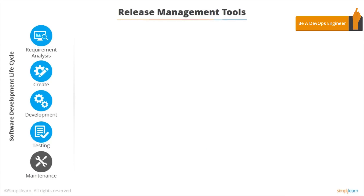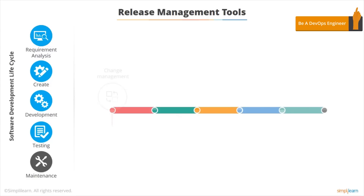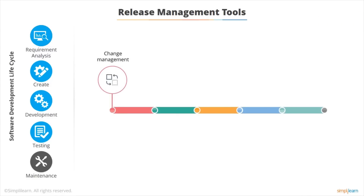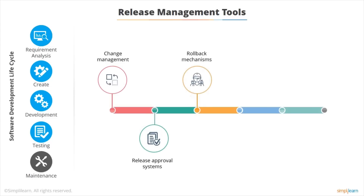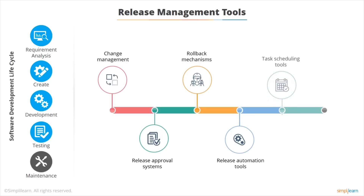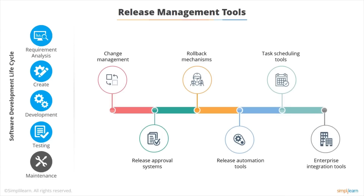Then we've got release management tools which are also very important. Change management systems — we don't make changes into production unless they've been fully documented and approved. We need approval systems to approve releases. We need important rollback mechanisms — if we deploy an erroneous system into production we need to get back to the previous version as quickly as possible. We need to automate the process of release and be able to schedule tasks so that we can run various components of the system at the right time and in the right sequence. And the important integration tools which allow us to deploy and change applications dynamically and automatically.